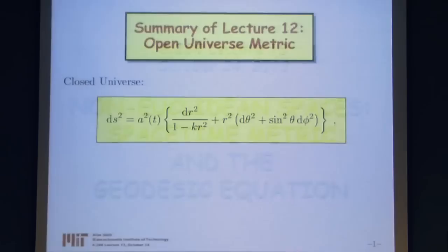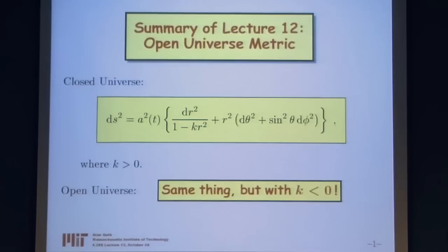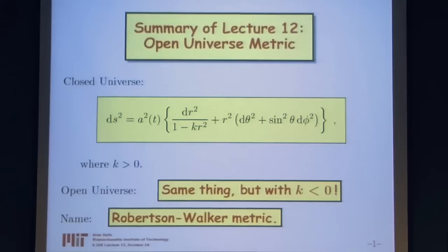Last time, we began by talking about open universes, and we got to open universes by way of closed universes. We started with the Robertson-Walker form of the closed universe metric, which holds for k greater than 0, describing a closed universe. We can use the same equation with k less than 0 for an open universe. The Robertson-Walker metric applies for k positive, negative, or 0. When k is 0, it becomes the Euclidean metric in polar coordinates — a flat space.